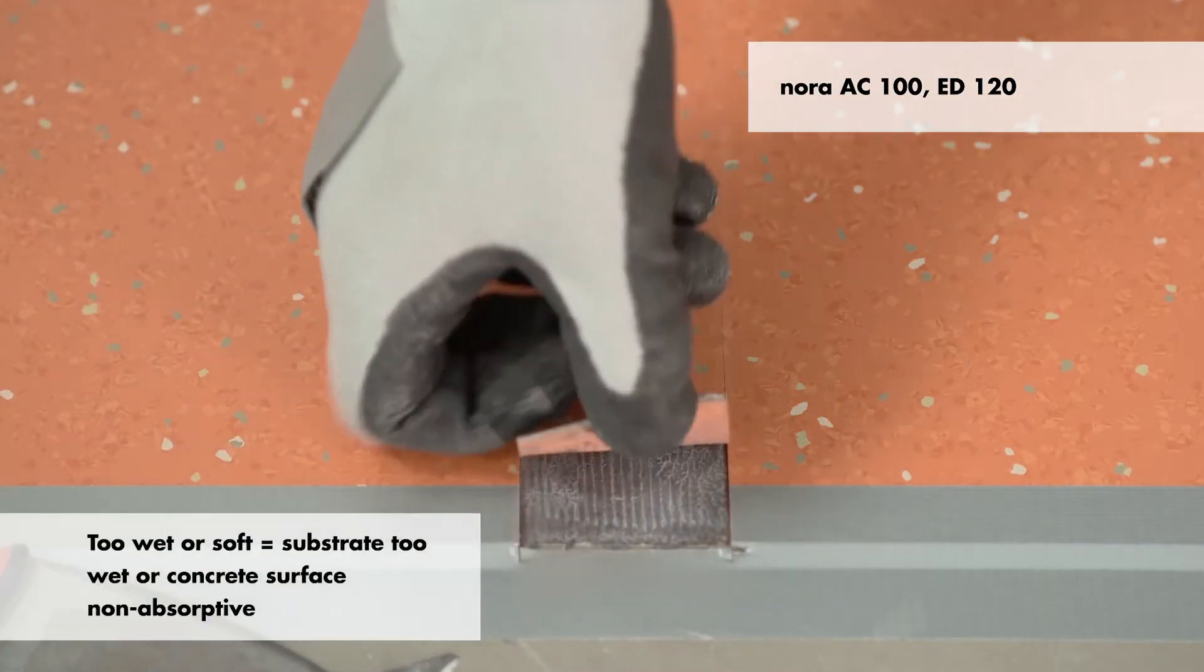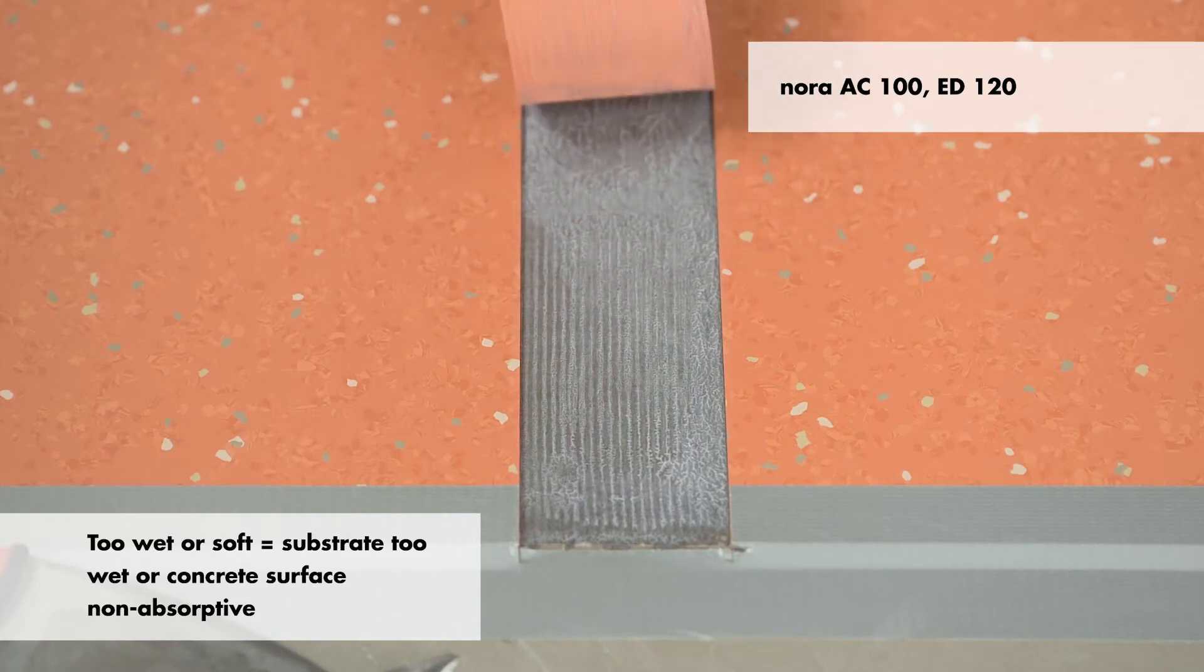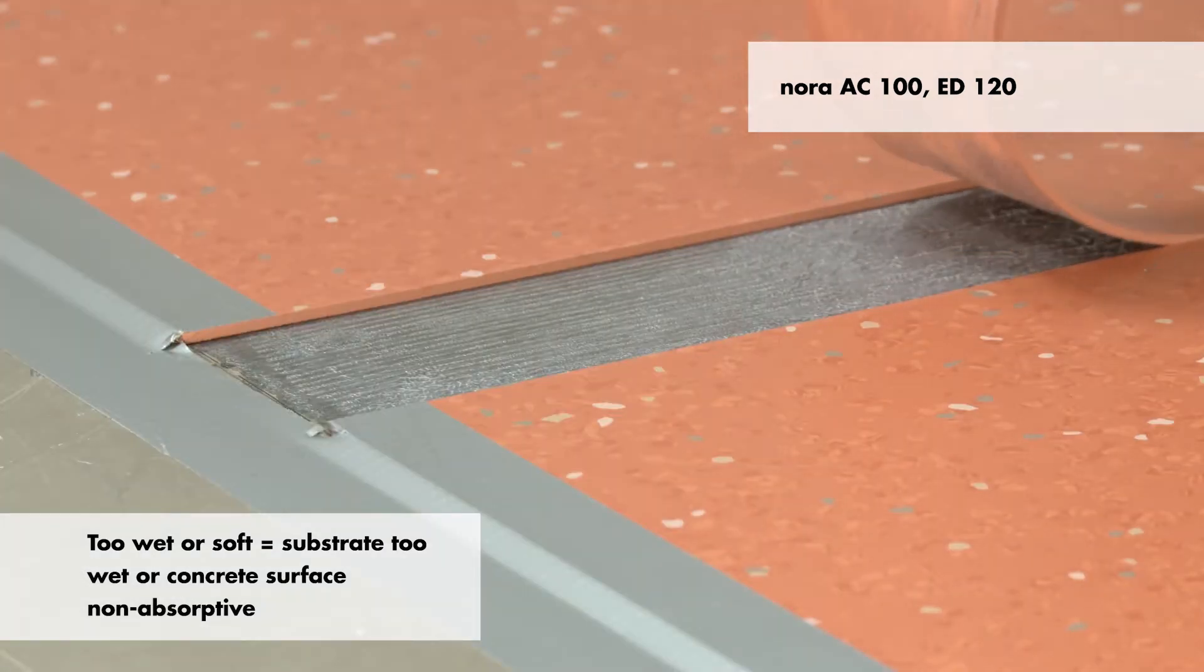For Nora AC100 and ED120, adhesive that is wet or soft means the substrate is either still too wet or the surface of the concrete is nonabsorptive.